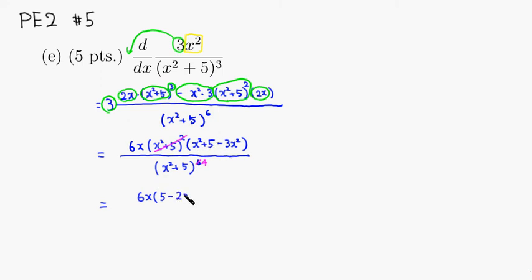And on the bottom, you would have quantity x squared plus 5, to the 4th power.